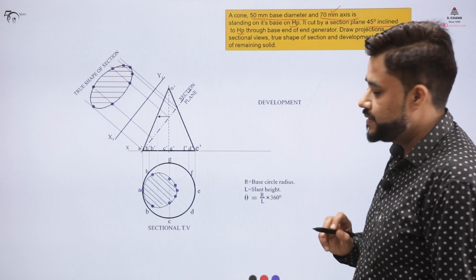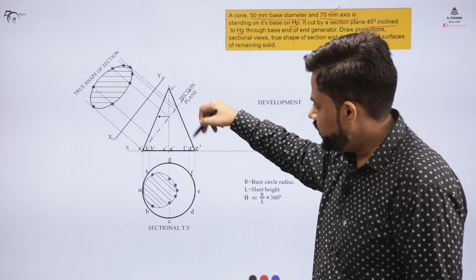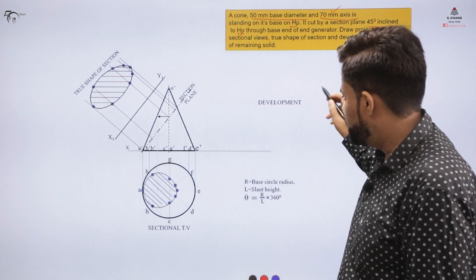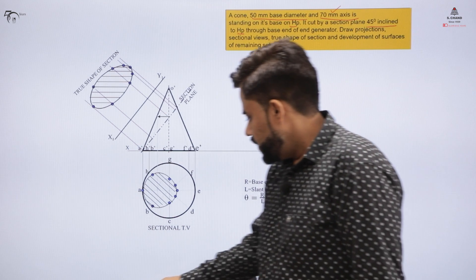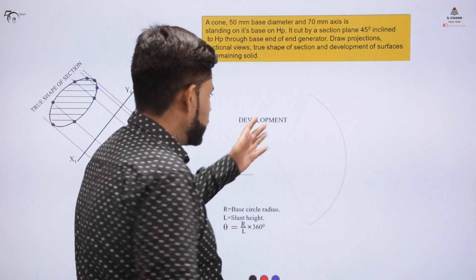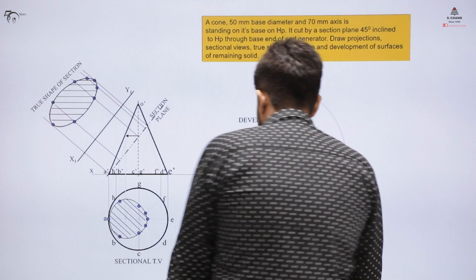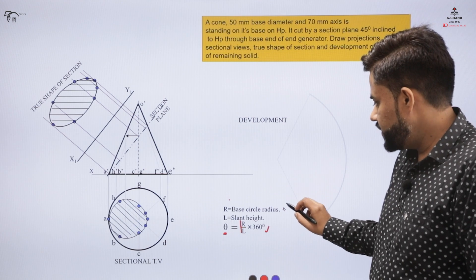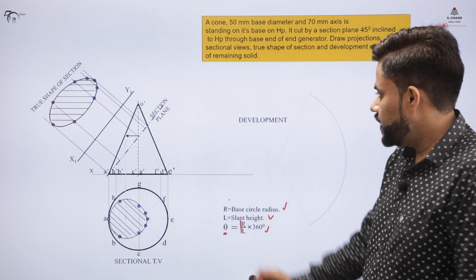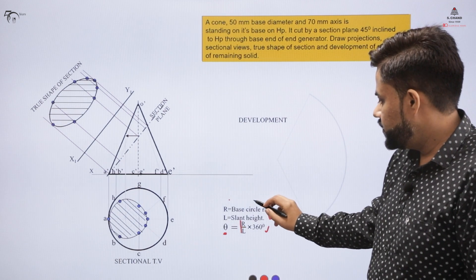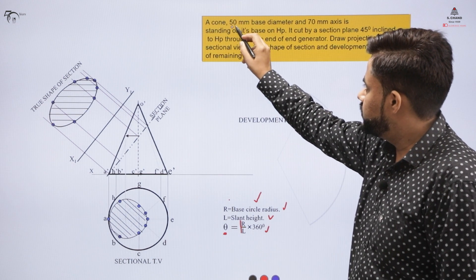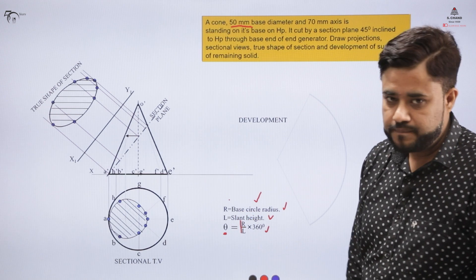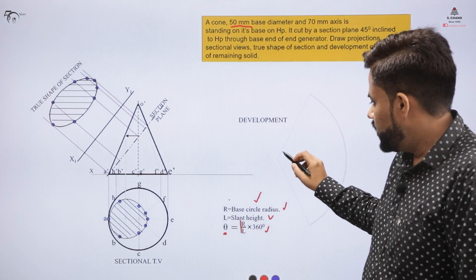The axis is 70 mm, but we can measure the slant edge of the cone from the shape using a scale on the mini drafter, take that length on the surface, and mark the distance. Then we find the angle of the open development using the formula: theta equals (r divided by l) multiplied by 360, where r is the base circle radius and l is the slant height. The base diameter is 50 mm so the base circle radius is 25, and the slant height is measured from the diagram.